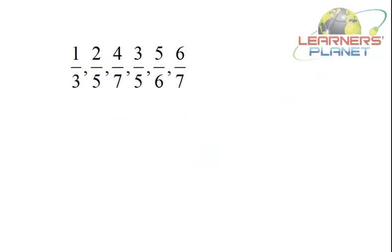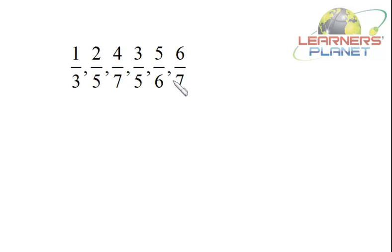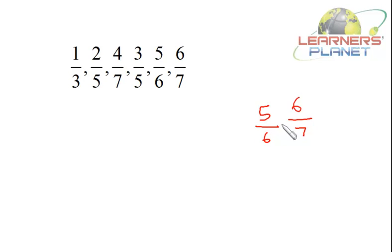Now let's arrange fractions in ascending order. We find which is the biggest by checking the numerator-denominator difference in each case. The differences are: 2, 3, 3, 2, 1, and 1. The two fractions with difference 1 have the highest numerator in the case of 6/7, so 6/7 will be the highest fraction. Similarly 5/6 will be the next highest.